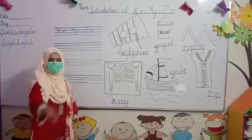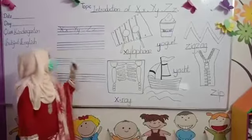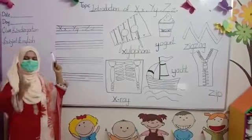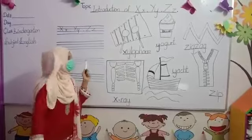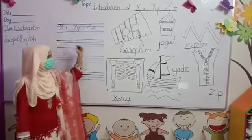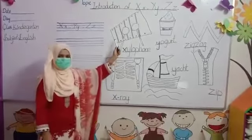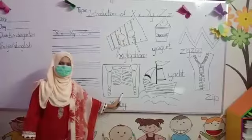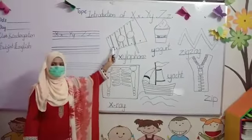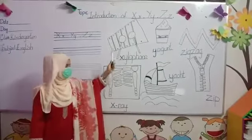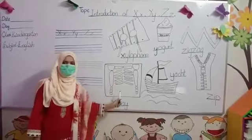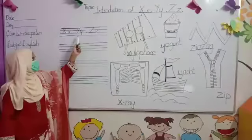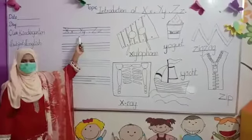X, X. Letter X, sound X, X. Example words: xylophone, x-ray. X, x-ray. Then letter Y.